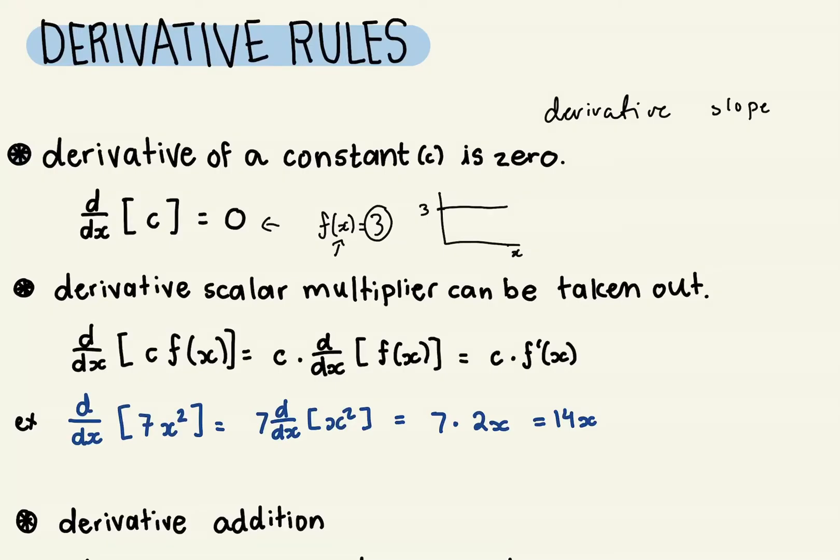So there really is no change, and that's why the derivative is going to be zero.